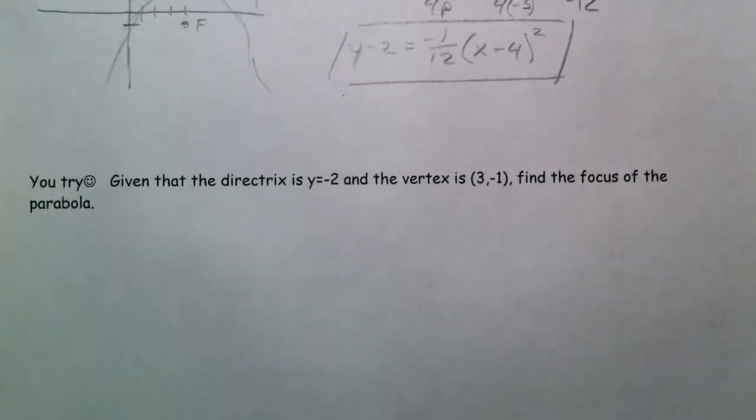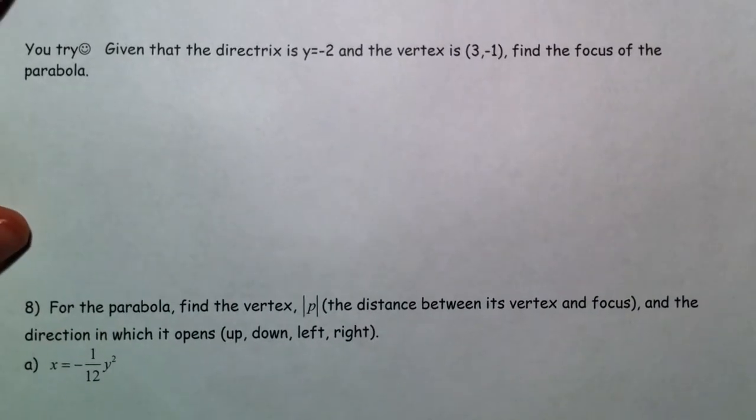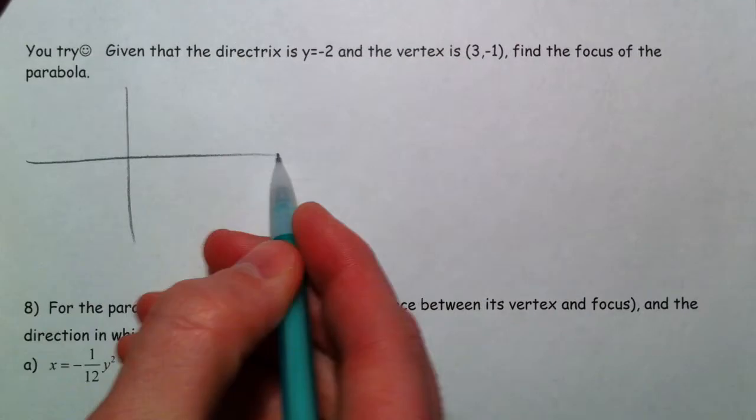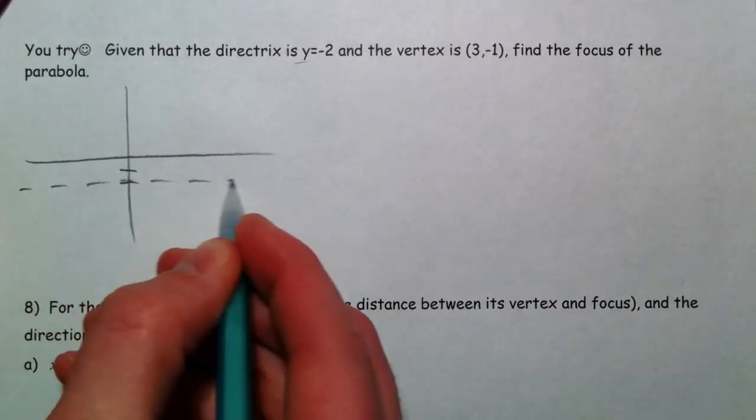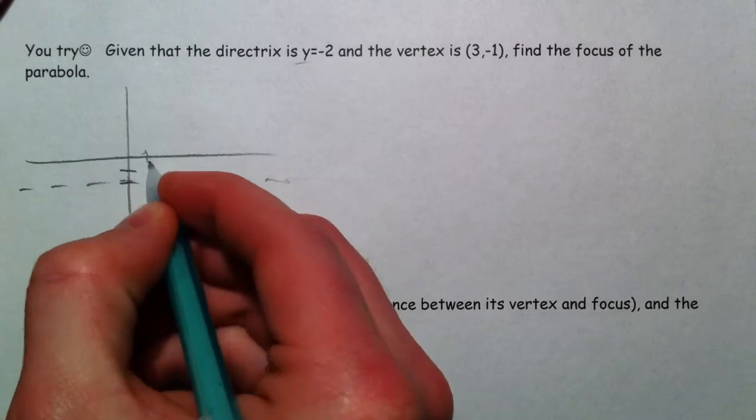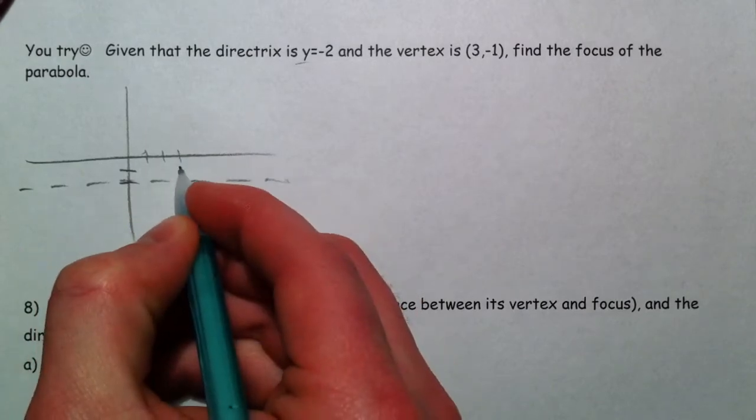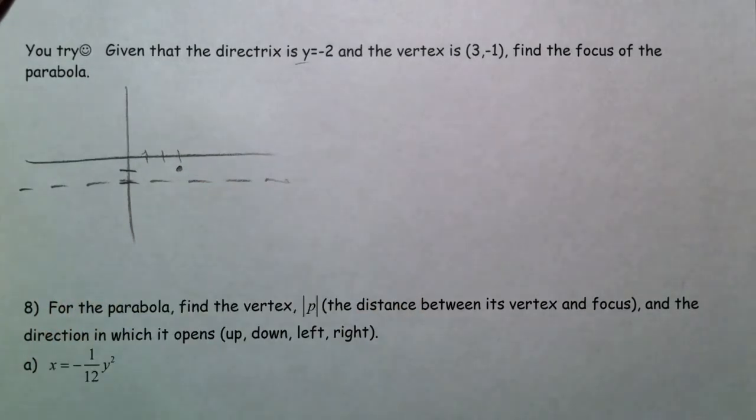Now I want you guys to try it. No, really. You try it. So, directrix is y equals negative 2. 1, 2. We've got a line. That's our directrix. Vertex, 1, 2, 3, negative 1 is our vertex.